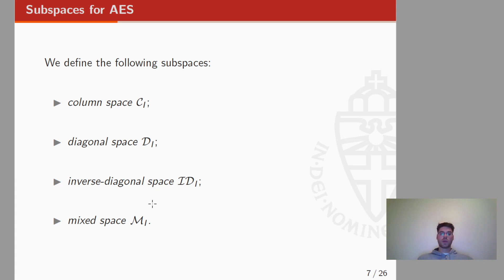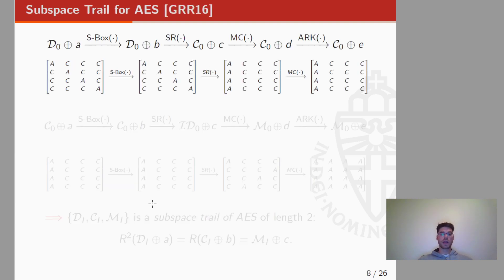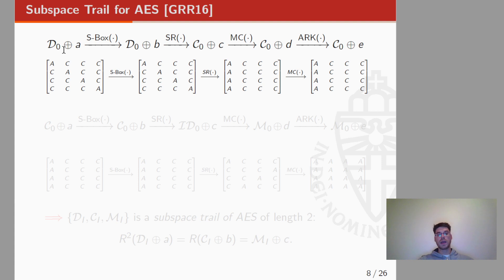I'm going to define the following subspaces: the column space, the diagonal space, the inverse diagonal space, and the mixed space. The diagonal space is a space of texts with either active or constant diagonal. For example, here the first diagonal is active and the other ones are equal to zero. We denote the diagonal space by the letter D, where the index zero refers to the position of the active diagonal. If we take a coset of this diagonal space, it is easy to prove that after one round this coset is mapped into a coset of a column space, which is a subspace where we have either active or constant columns.